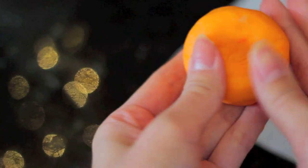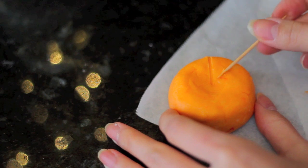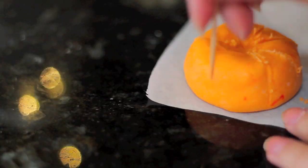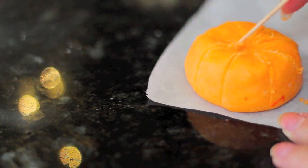Now you're just going to take a toothpick and you're going to make some lines to make it look exactly like a pumpkin.